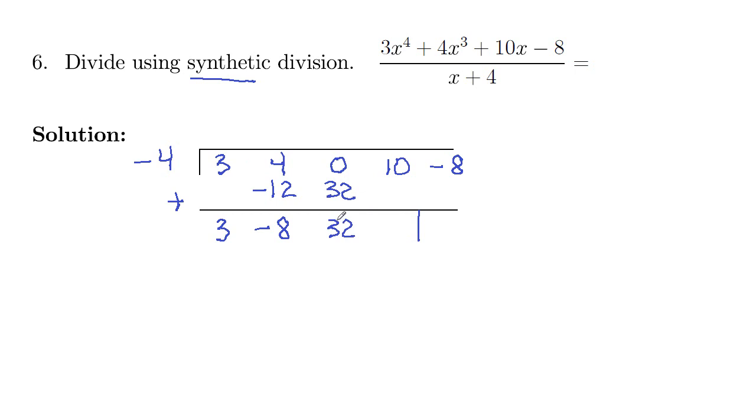Multiply out in front again. 32 times negative 4, so that's going to be negative 128. So positive 10, negative 128, so that's negative 118.